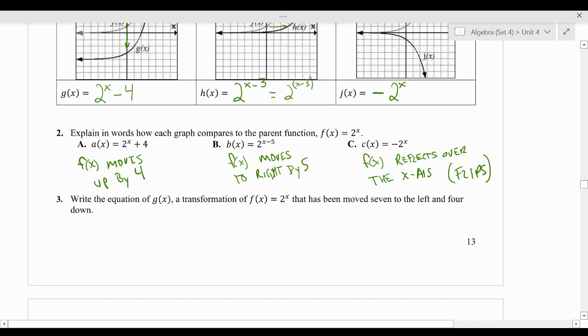Alright, and finally, let's look at number 3, the last example. Write the equation of g of x, a transformation of f of x equals 2 to the x, that has been moved 7 to the left and 4 down. So it moves 7 to the left and 4, I'm going to rewrite it down.